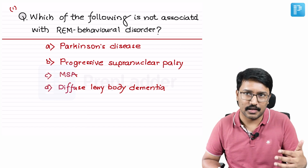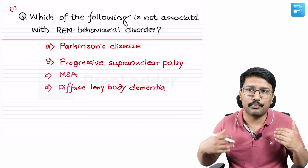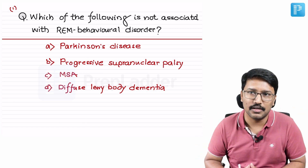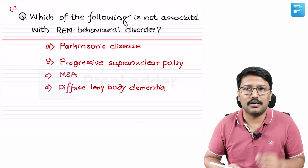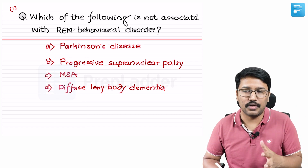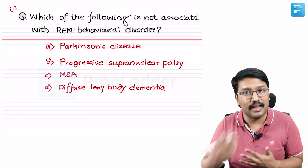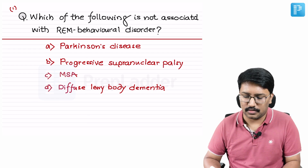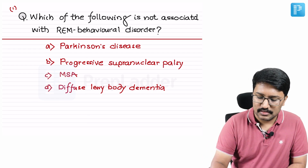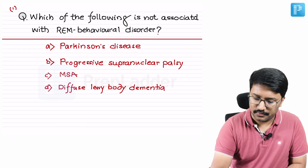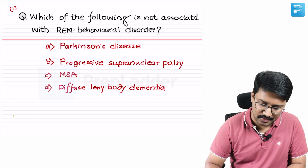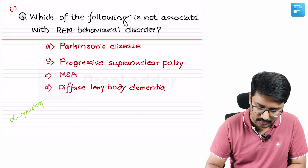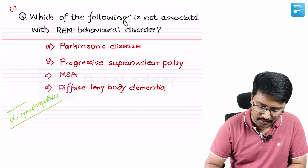REM behavioral disorder is a sleep disorder where patients start enacting their dreams. Normally, during REM sleep we experience dreams but don't act on them because of the profound hypotonia during sleep. In some conditions where tone is sustained during sleep, patients may start enacting their dreams because hypotonia is not prohibiting the movements from being carried out.